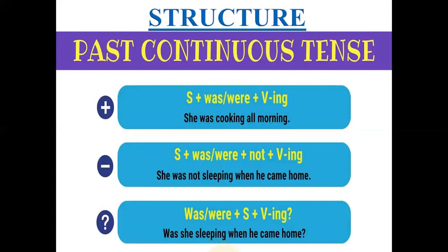Now, past continuous tense. First of all, the structure — the picture is visible on your screen. Affirmative: subject plus was/were plus V-ing or fourth form. We already covered the fourth form in present continuous. Negative: subject plus was/were plus not plus fourth form. Interrogative: was/were plus subject plus fourth form or -ing. Example sentences: 'She was cooking all morning.' Negative: 'She was not sleeping when he came home.' Interrogative: 'Was she sleeping when he came home?' This is the structure of past continuous — how to make a past continuous tense.